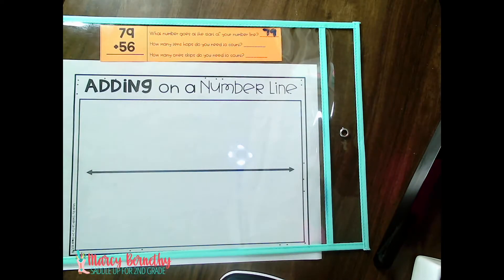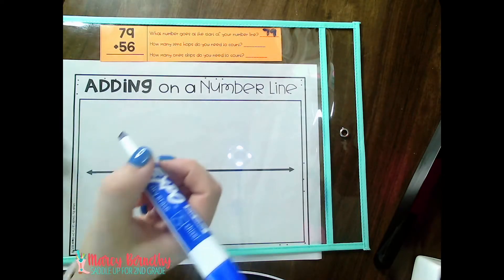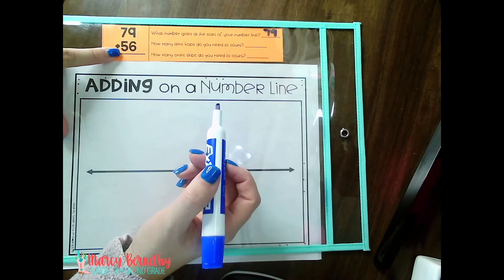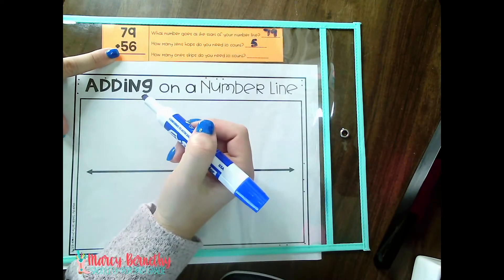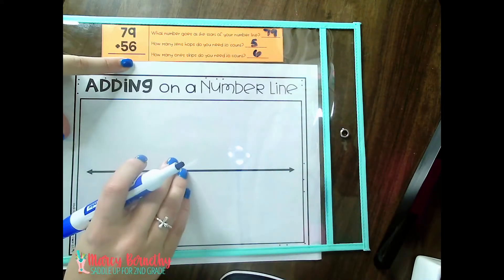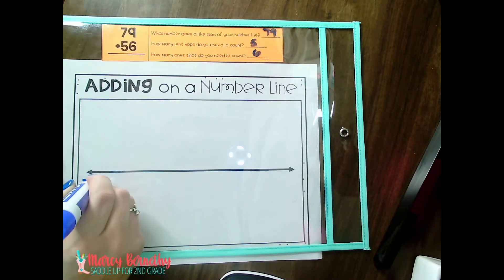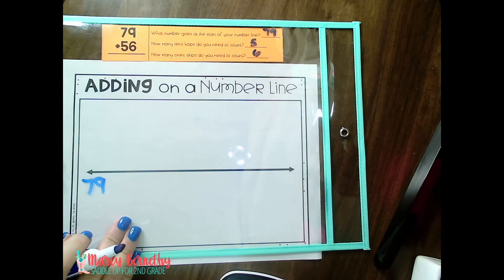Then what we do is we call the tens hops and the ones skips, because a hop is bigger than a skip. And when we get into adding hundreds and using this strategy, we call the hundreds leaps. So 100 leaps, tens hops, ones skips. So how many tens hops do you need to count? Well, what number is in our tens place in 56? Five. How many one skips do we need to count? Six. So once we have that information figured out, then we're going to go ahead and write 79 at the beginning and start of our open number line. We need ten hops. This is where skip counting and having that strong understanding of skip counting really comes into play.